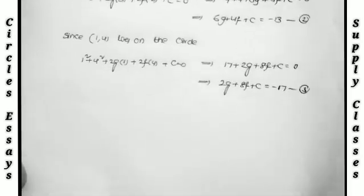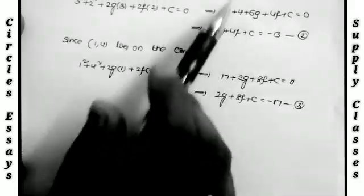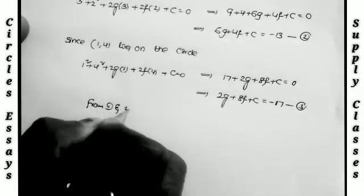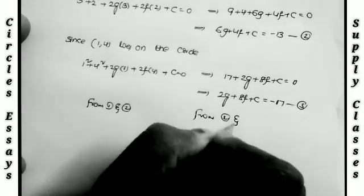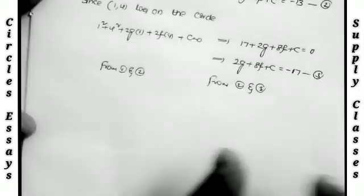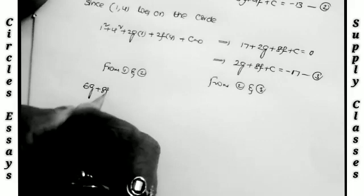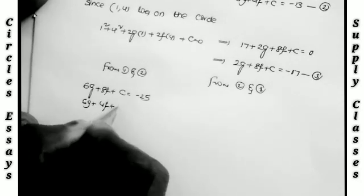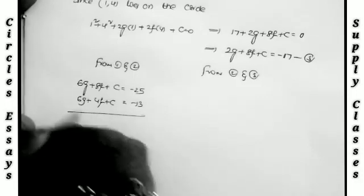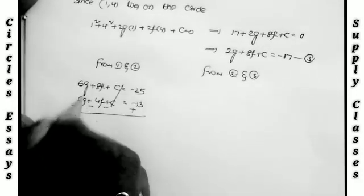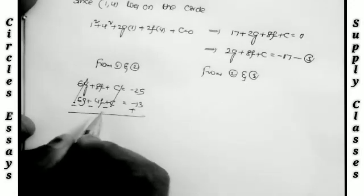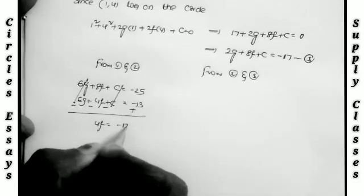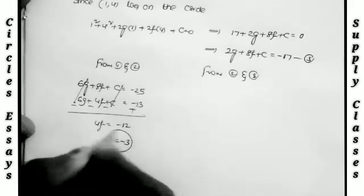To find the equation of the circle, we need the values of G, F, and C. Using these three equations, we first find G and F. Taking Equation 1 and Equation 2: subtract Equation 2 from Equation 1 to cancel C. Simplifying: 8F − 4F = −25 + 13, so 4F = −12, giving the value of F = −3.